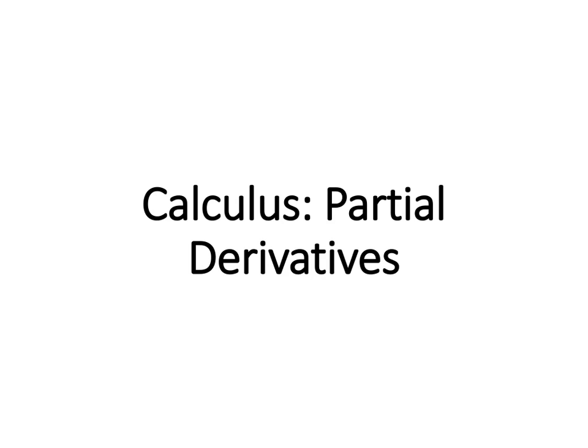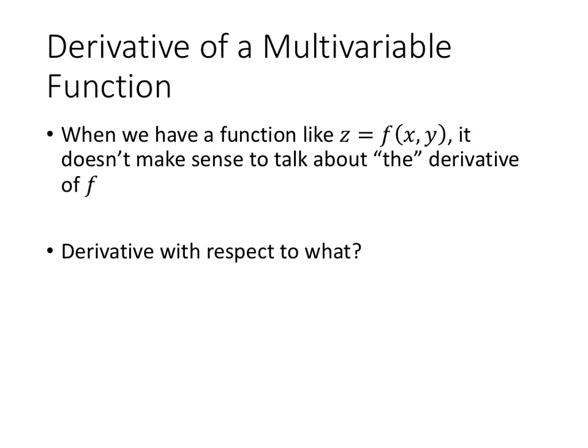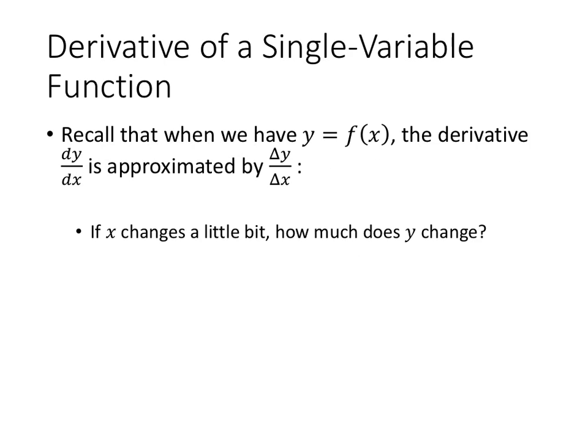In this video, we'll discuss how to compute the so-called partial derivatives of a function of several variables. When we talk about a multivariable function, it doesn't really make sense to talk about the derivative of that function — derivative with respect to what? We've got multiple variables, so we could theoretically take a derivative with respect to any number of them. To think about how to approach this, let's go back to what a single variable derivative meant.